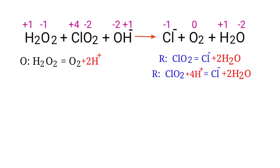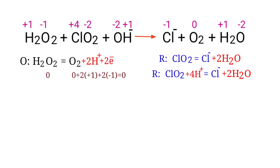For a redox reaction, the addition of charges should be equal on both sides. In the oxidation half reaction, both sides are not equal. To make them equal, you must add electrons — you cannot add protons. Adding two protons to the left side to make it equal to plus two is wrong; instead, add two electrons to the right side to make it equal to zero. Now the charges are equal in the oxidation half reaction.